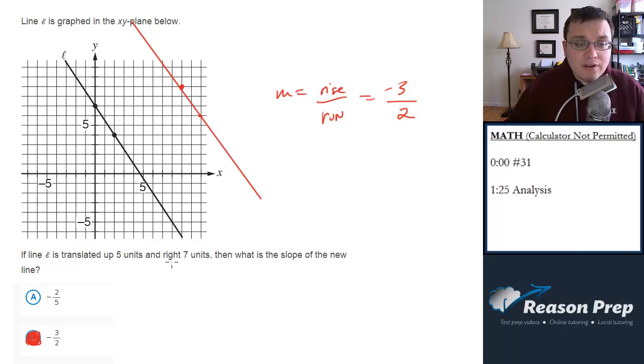Transformations moving up 5 and to the right 7. But as we saw in this particular problem, that was kind of a red herring. No change is going to happen to the slope of the line if you do that. The y-intercept will change, and of course the points on that line will change, but the slope won't. So not too bad of a question.